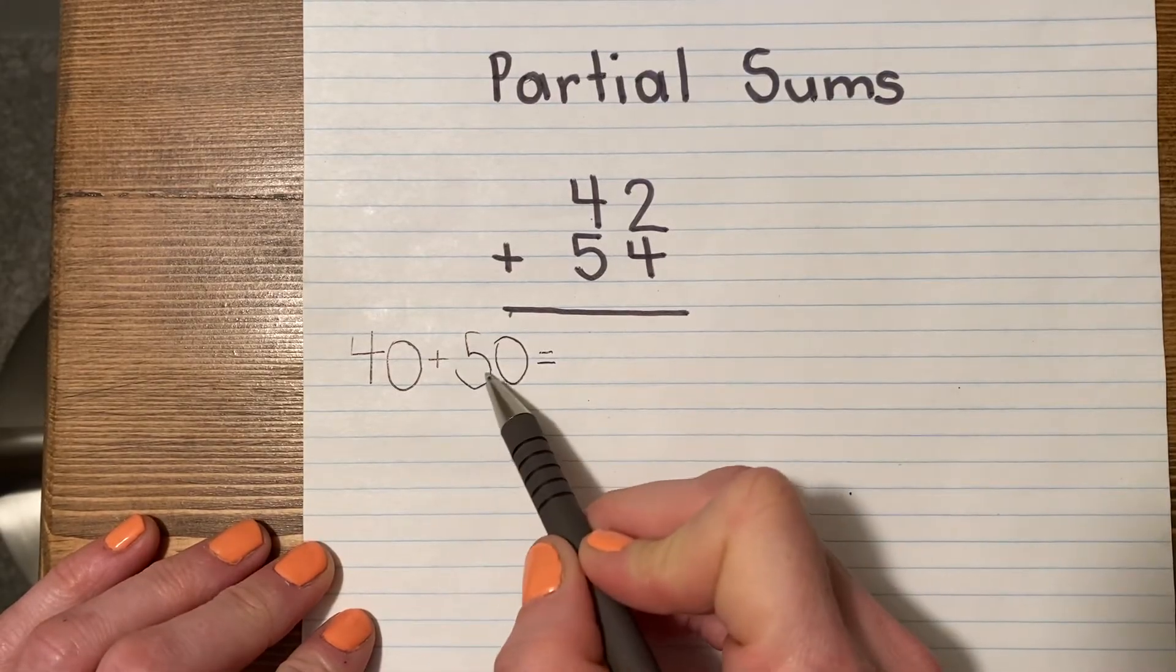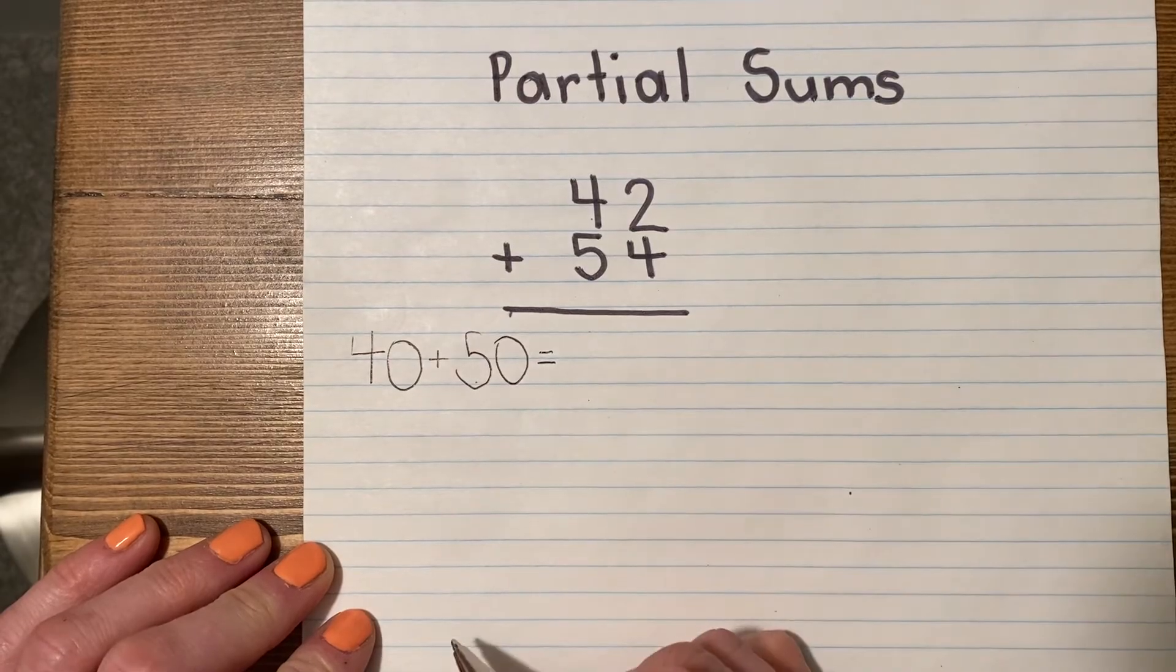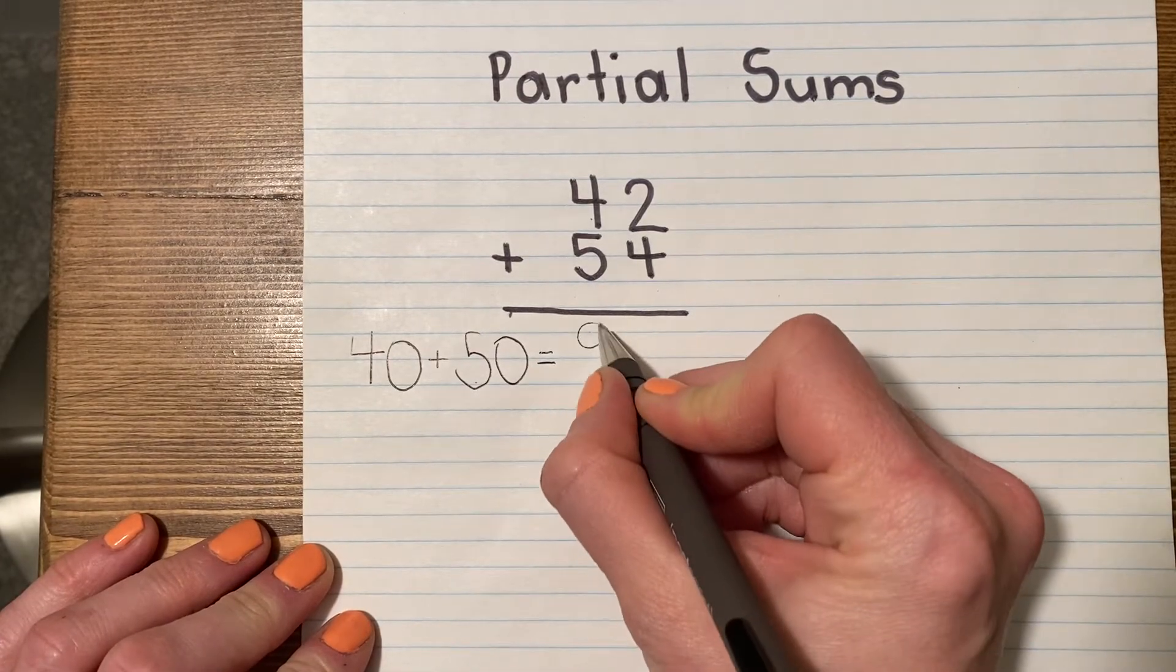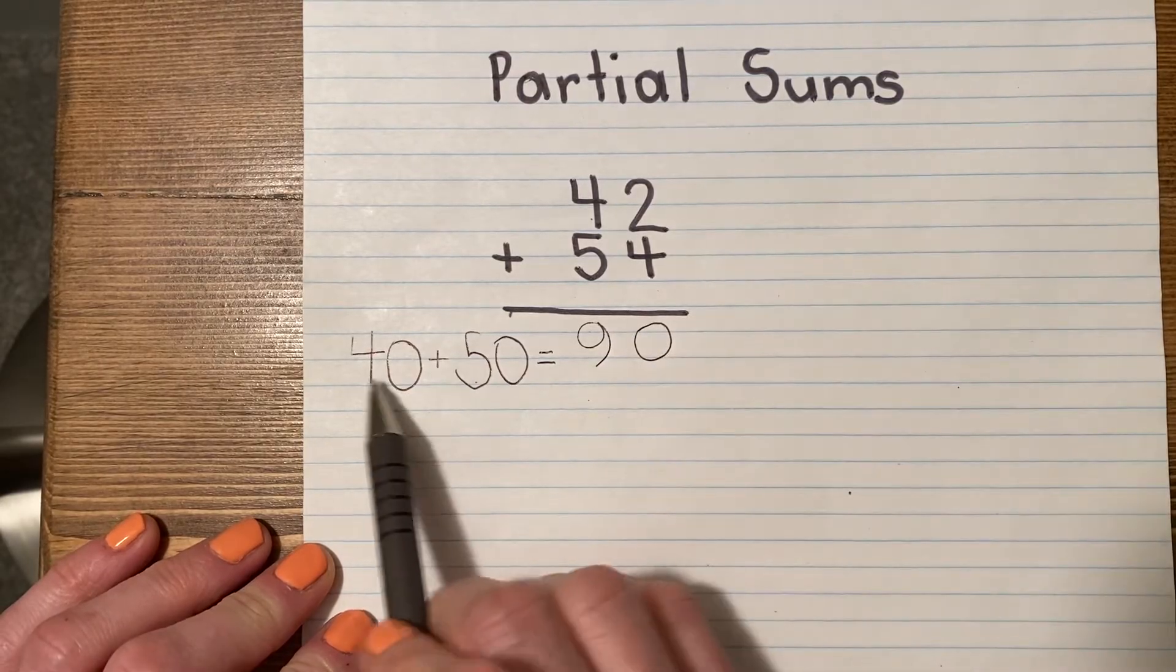So to do 40 plus 50, I like to think of 4 plus 5, and then you place an extra 0. So 4 plus 5 is 9, and I place an extra 0. So now I've done my tens.